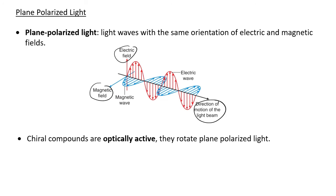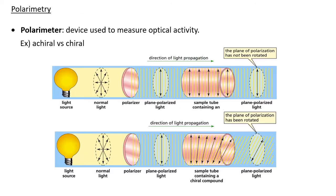Chiral compounds are optically active, which means they will rotate this plane polarized light. We can take advantage of this with a lab technique called polarimetry — this was in the lab that we did before spring break. A polarimeter is the device used to measure optical activity, just like in our lab.